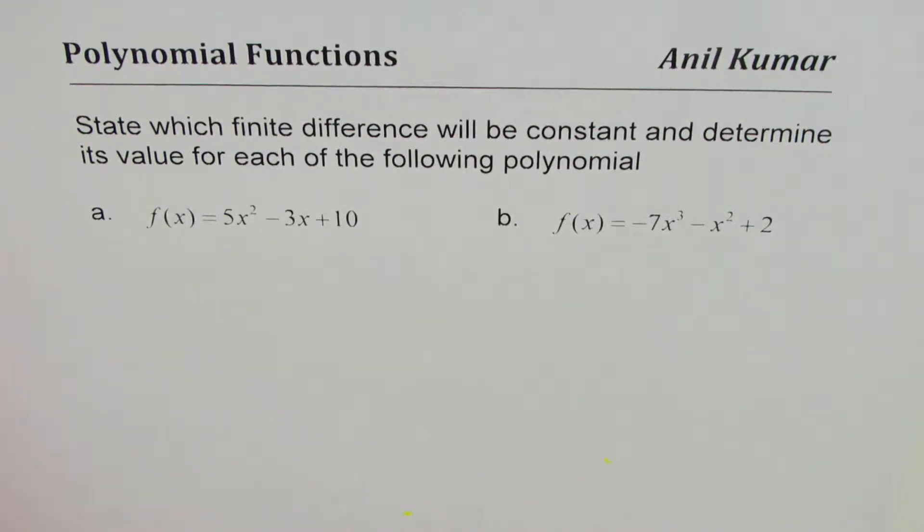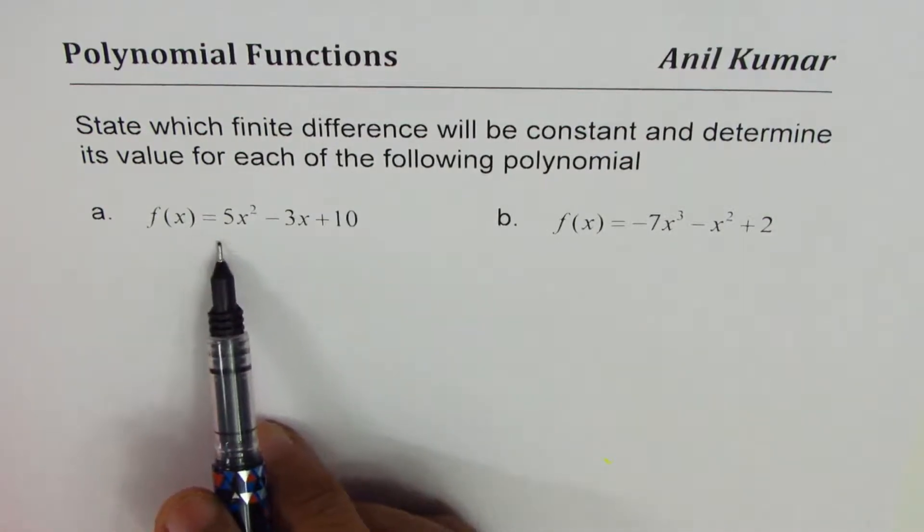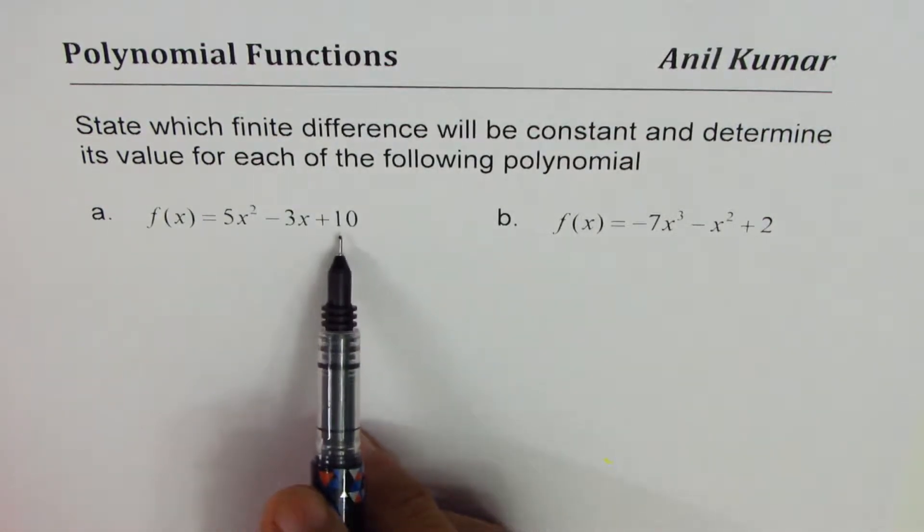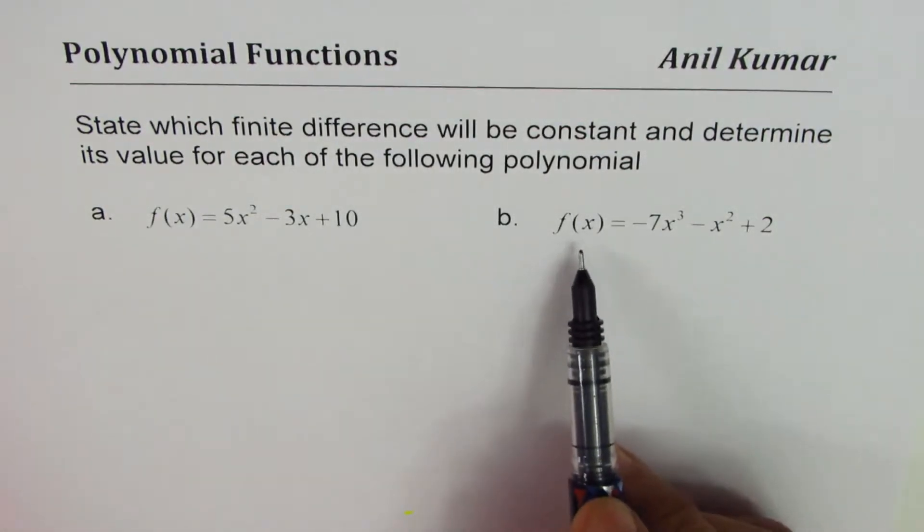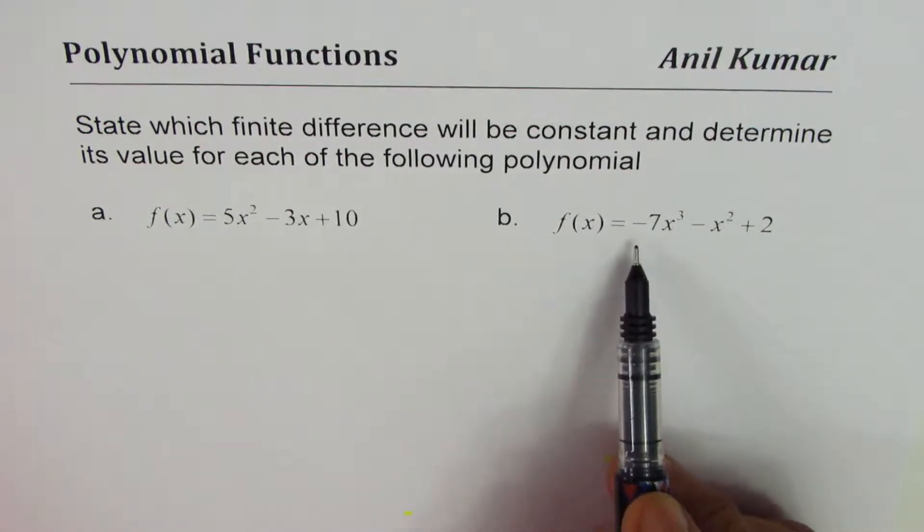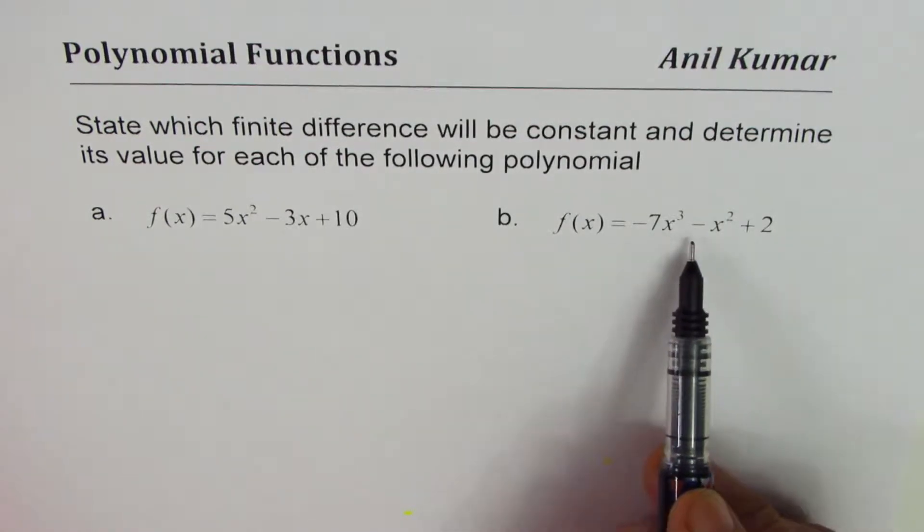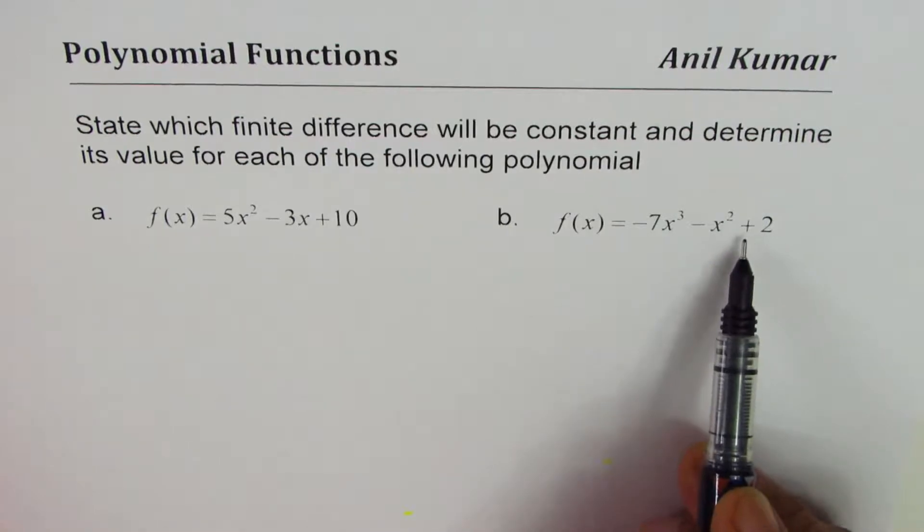The question here is, state which finite difference will be constant and determine its value for each of the following polynomial. You are given two polynomials: a, f of x equals 5x squared minus 3x plus 10, and b is f of x equals minus 7x cubed minus x squared plus 2.